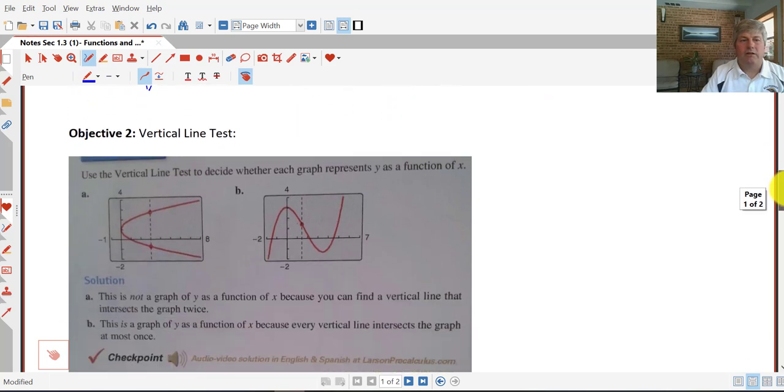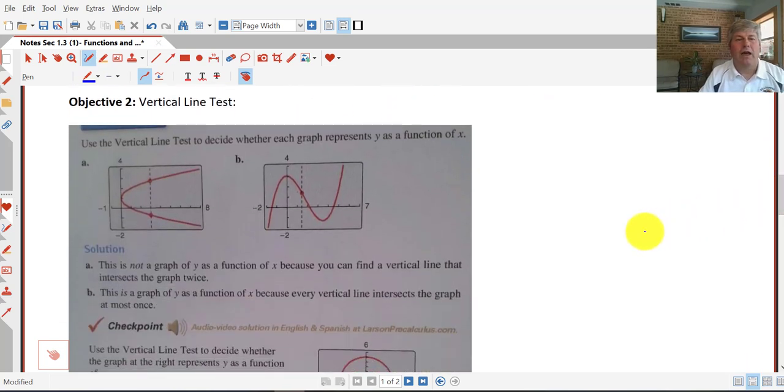Our second objective, the vertical line test. The vertical line test tells us whether the graph of a function is indeed a function. And we can use the vertical line test. So you can see here in sample A, if we input looks like three, we get two different outputs for the same input. Well, that violates one of our properties of functions.